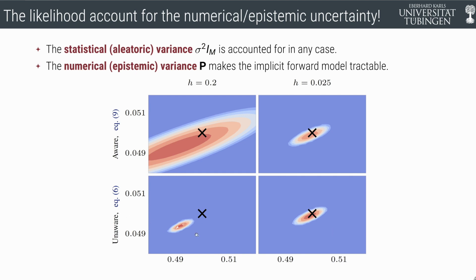In the left column, you see a large step size h, and in the right column, you see a smaller step size h. You see that the true parameter θ, which is represented by the black cross, lies within the region of high probability only for the aware version.